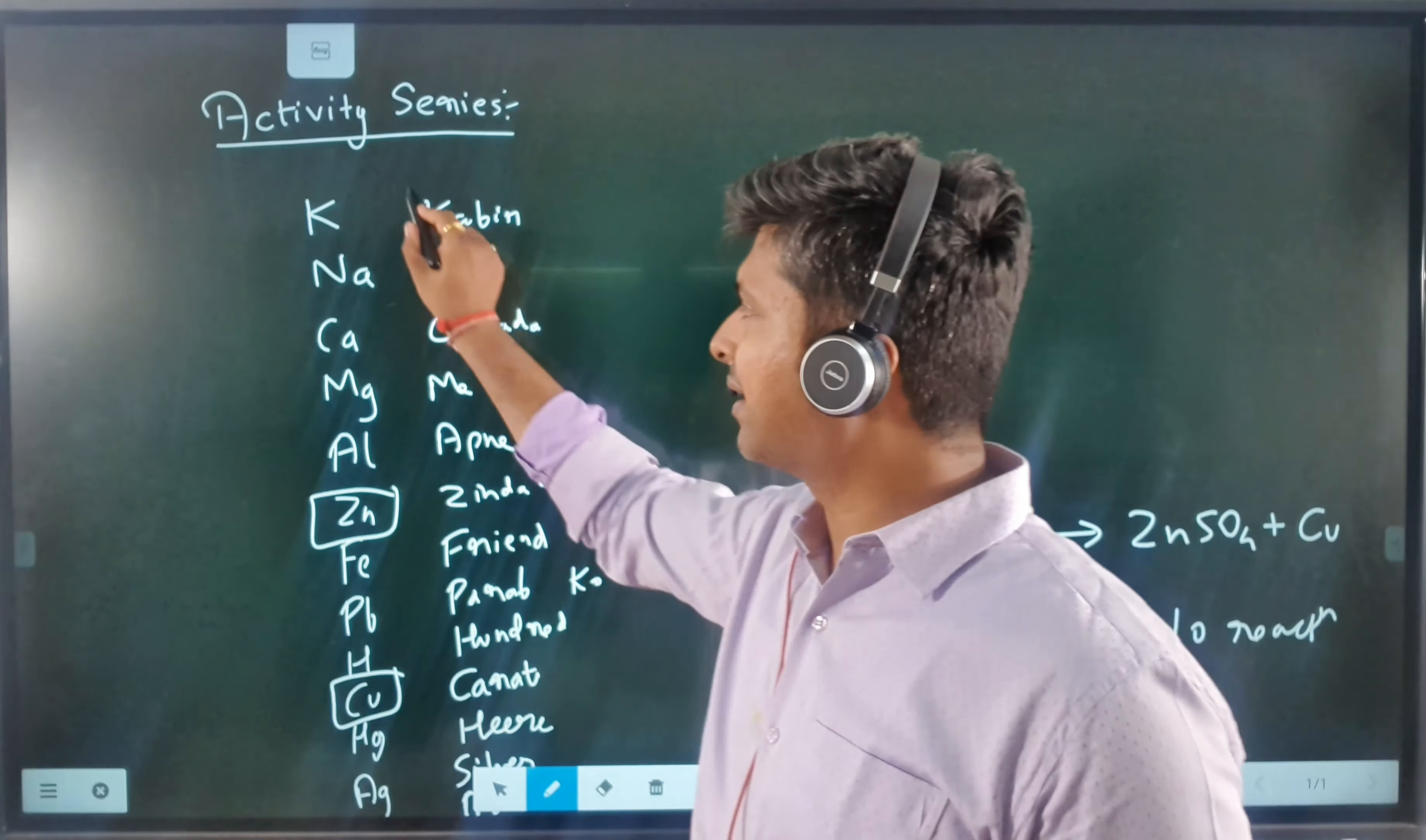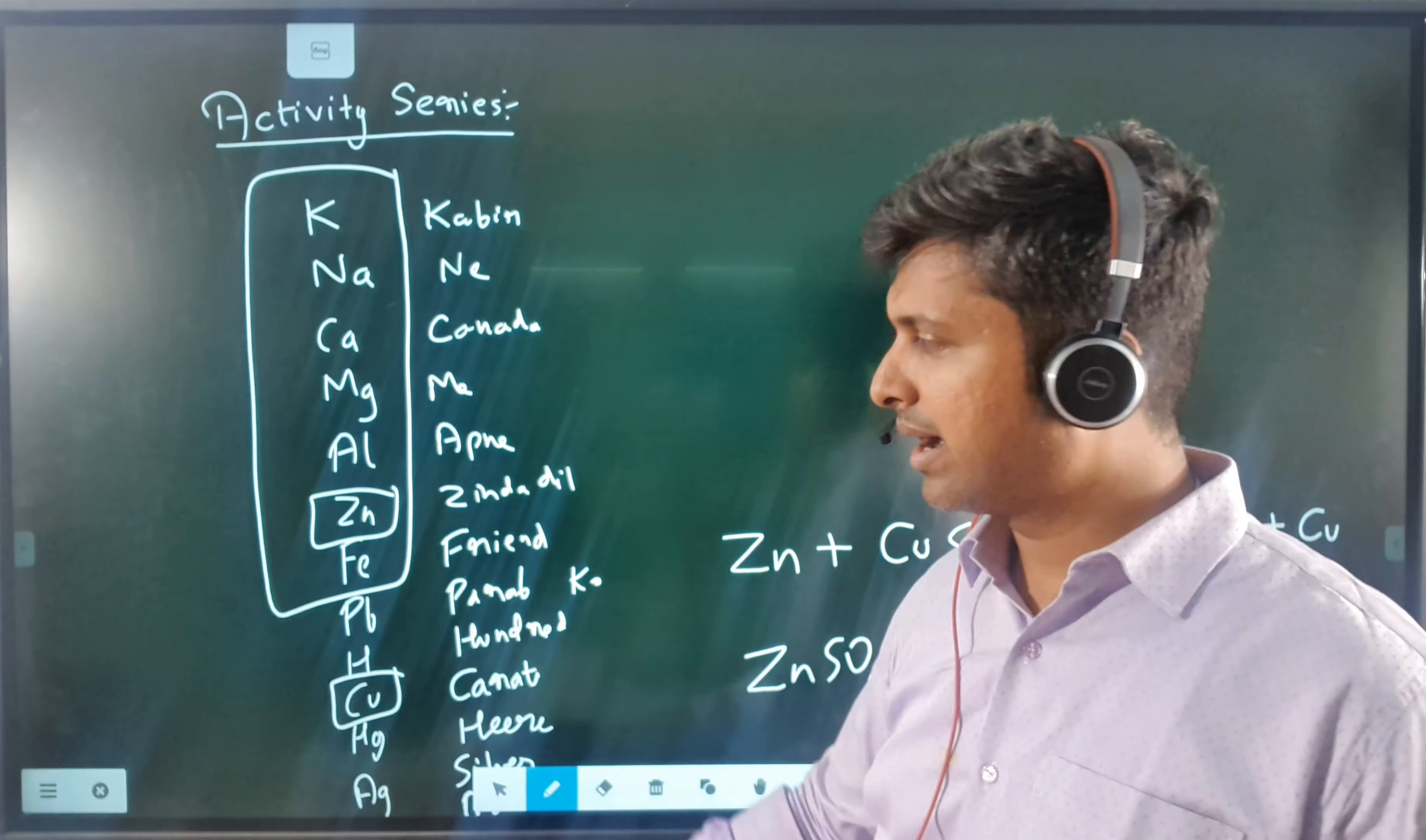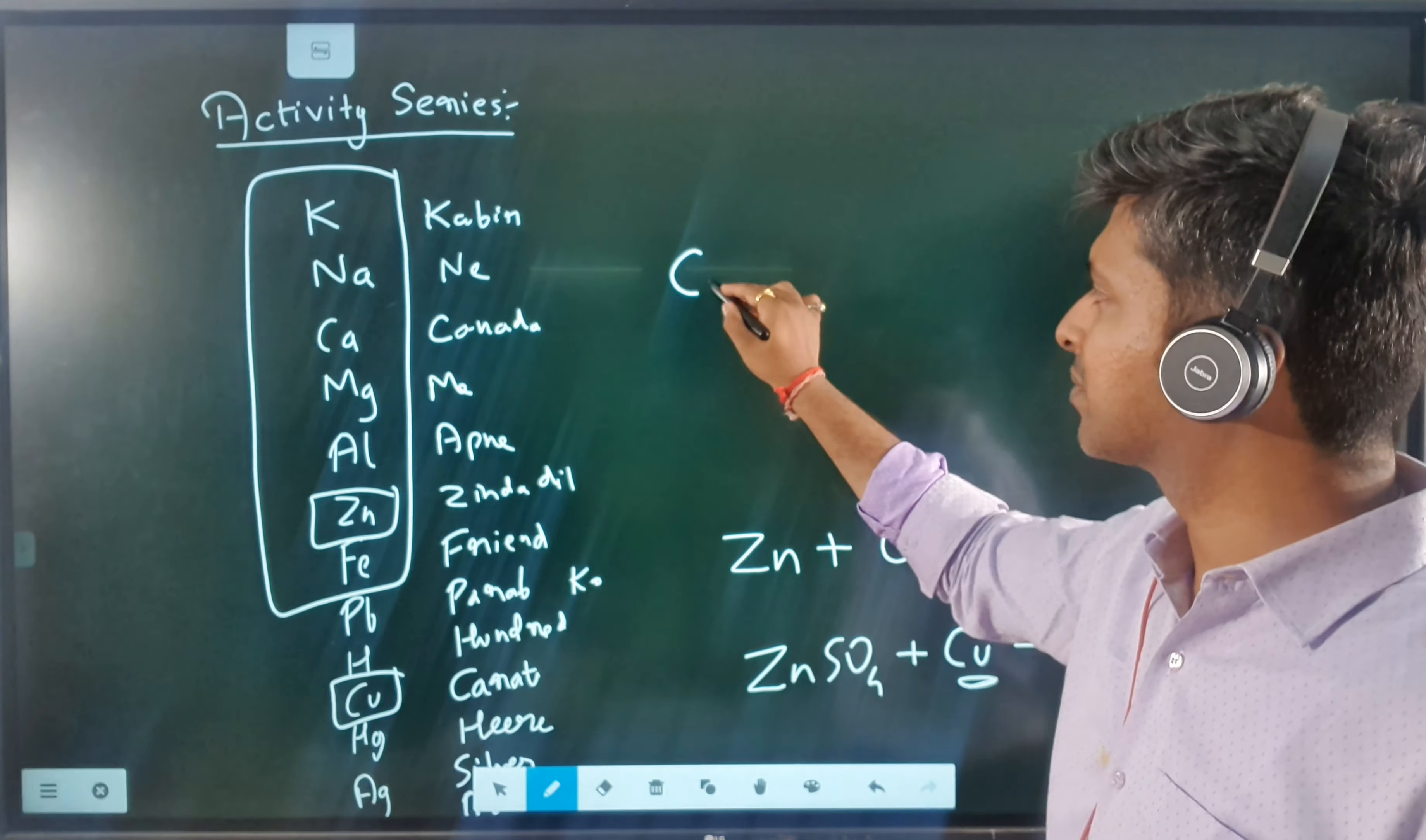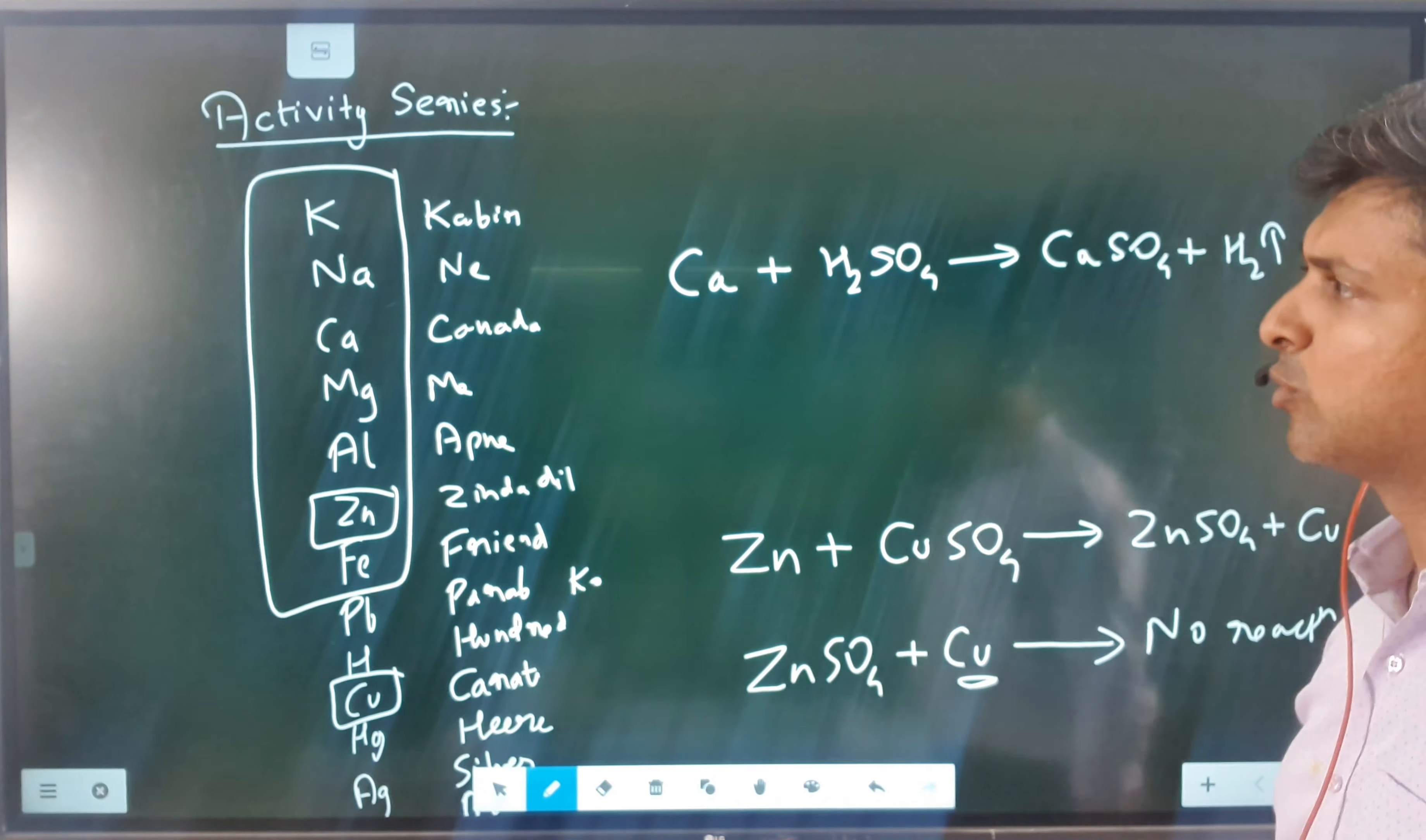All the elements which are placed above hydrogen can displace hydrogen from acids. I've not included lead—lead is an exception. Lead cannot displace hydrogen from acids. Say for example, if you take calcium with H2SO4, calcium can displace hydrogen from acids.